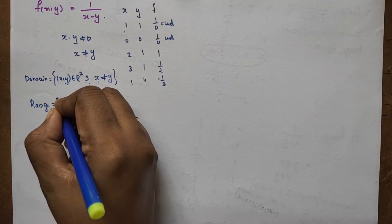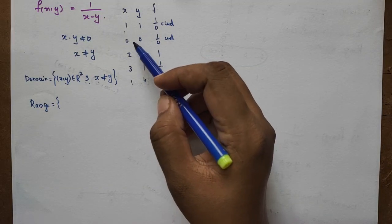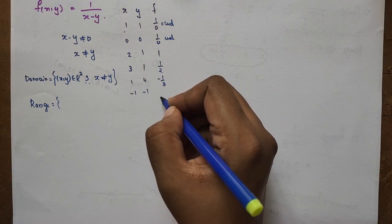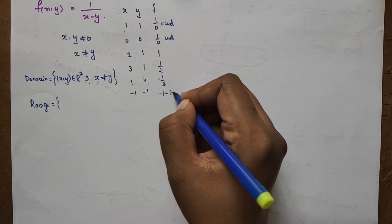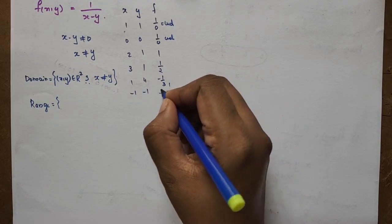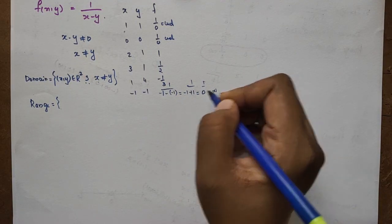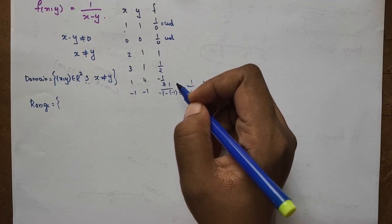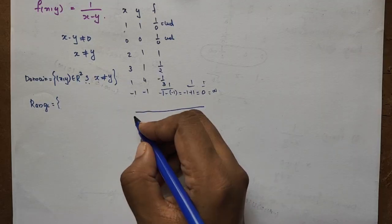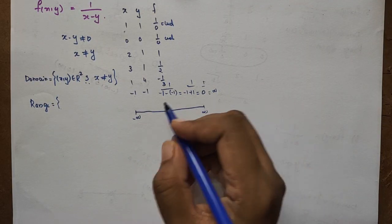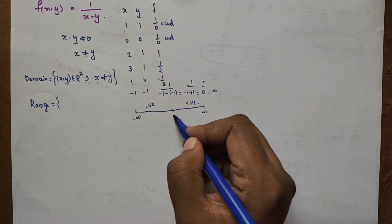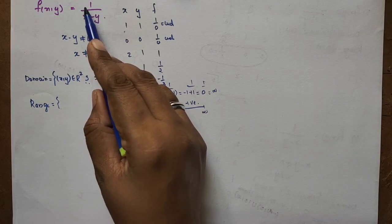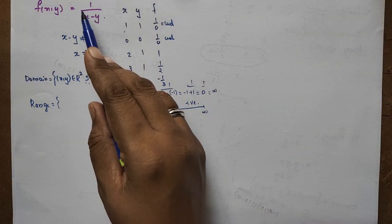For the range: the numerator is 1 (a constant), and the denominator x−y can be any real number except 0. So f can take any real value except 0. For example, 1/(x−y) can be positive or negative, but never 0.